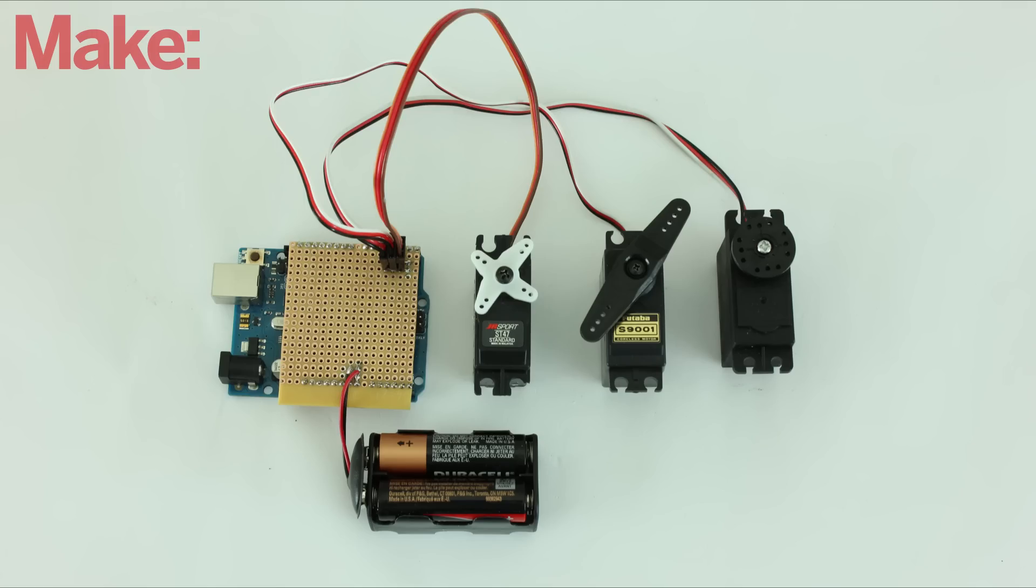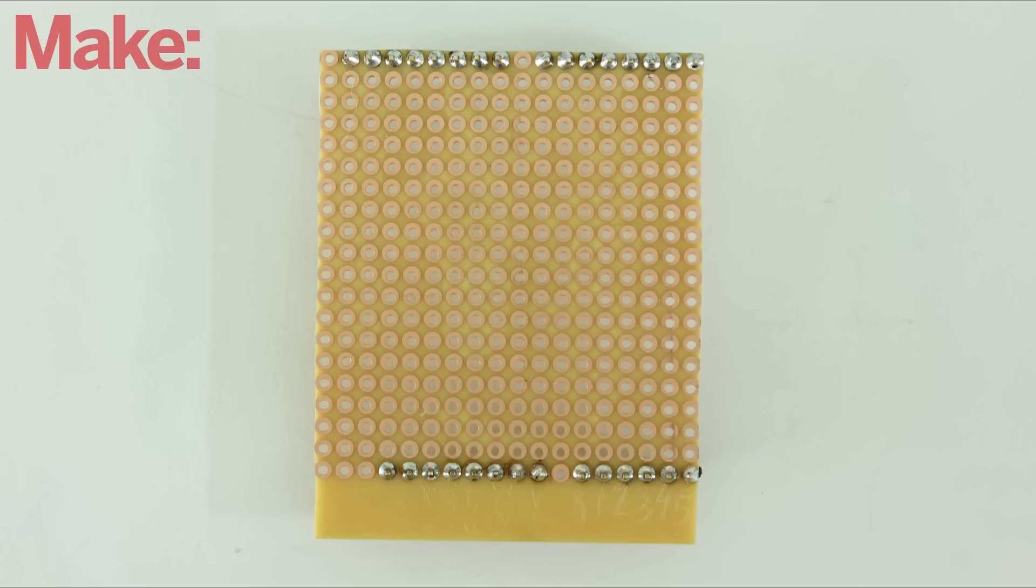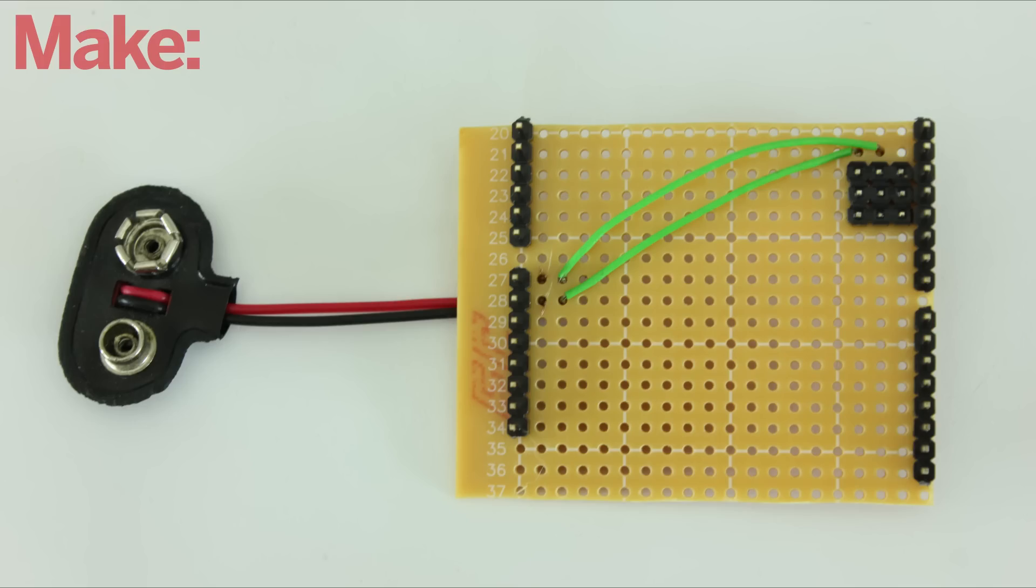As another example, here's how to create a servo shield. Starting with the basic protoshield, all you have to add is some simple header pin connectors, jumper wires, and a power supply.